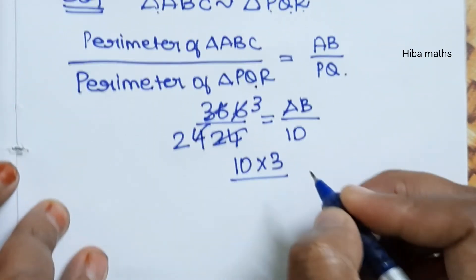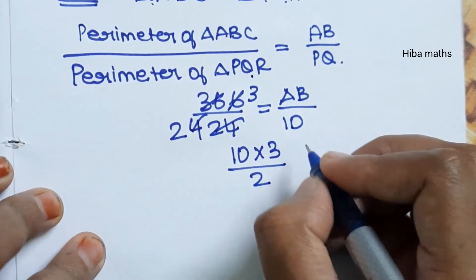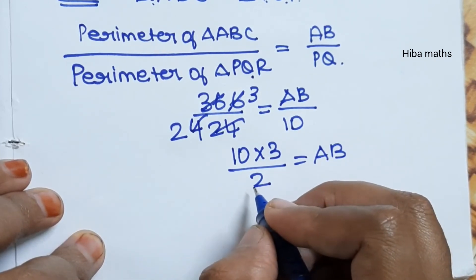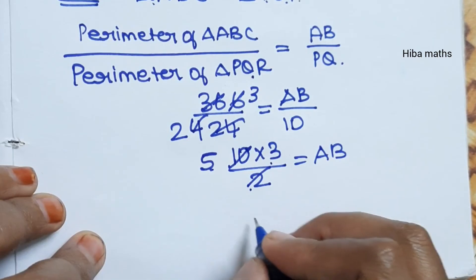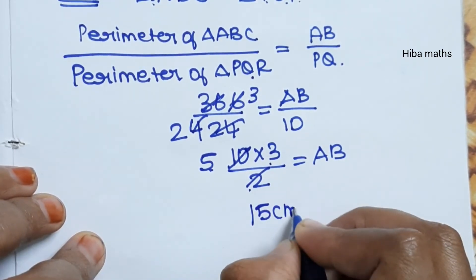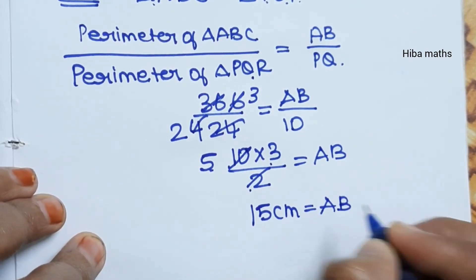10 into 3 divided by 2. That is equal to AB. 10 divided by 2 equals 5. Now 5 times 3 equals 15 cm. That is very easy. As you can see with the perimeter.